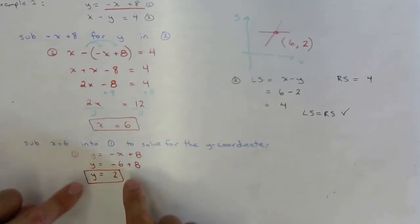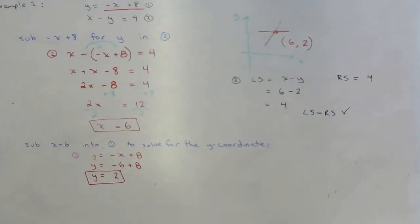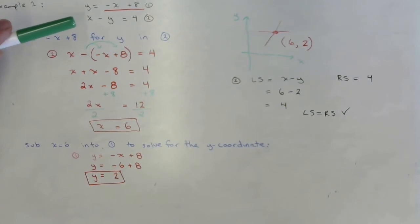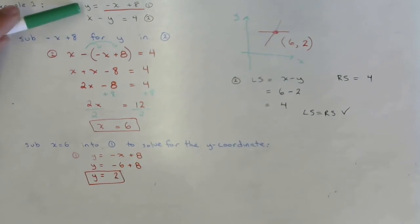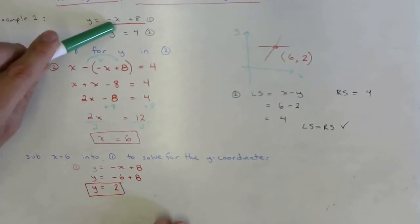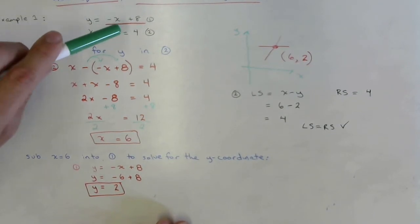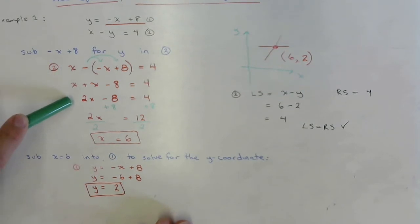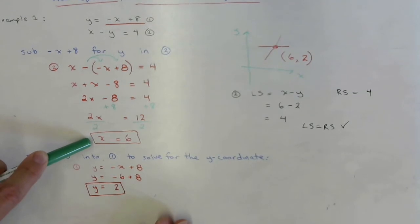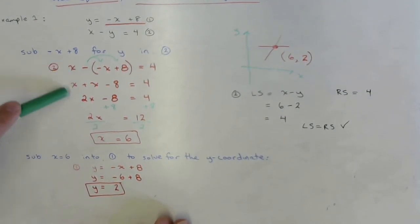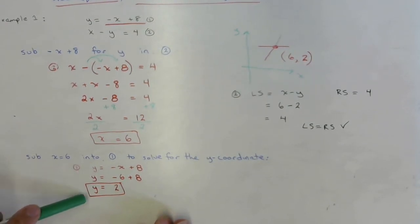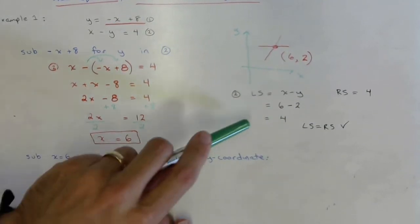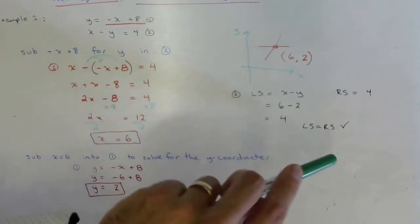Quick recap: given two linear equations in any format, I chose equation 1 as the expression for substitution because it already gives me y in terms of x. I put negative x plus 8 into equation 2 wherever I see y, used brackets because of the negative sign, did basic algebra to simplify, solved for x, then subbed back into equation 1 to find y, and verified.